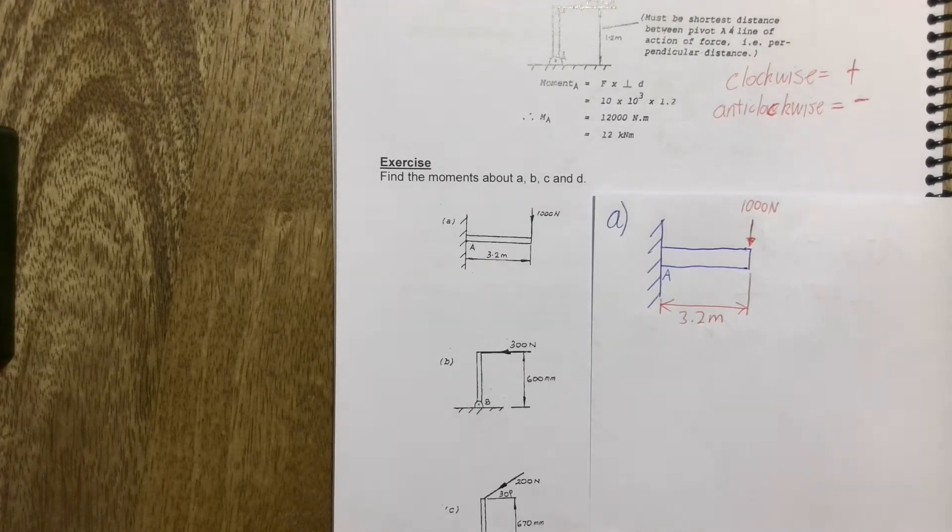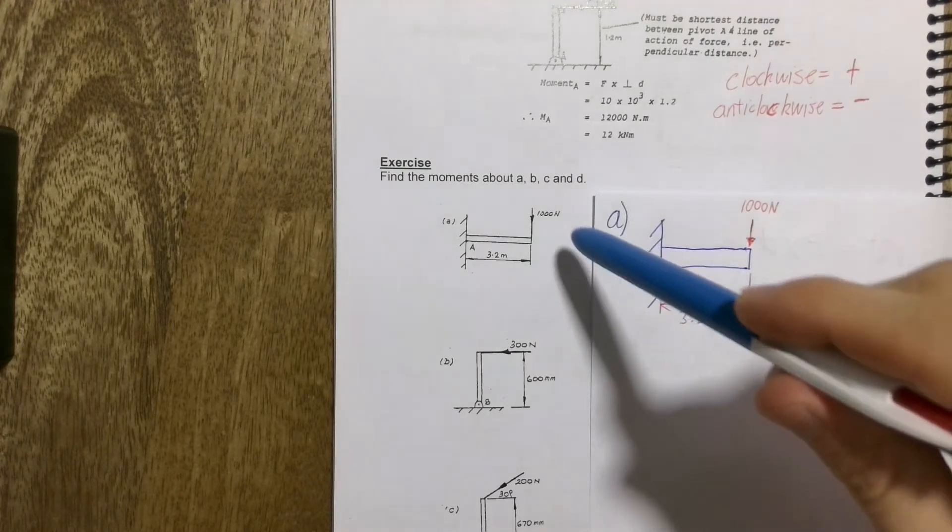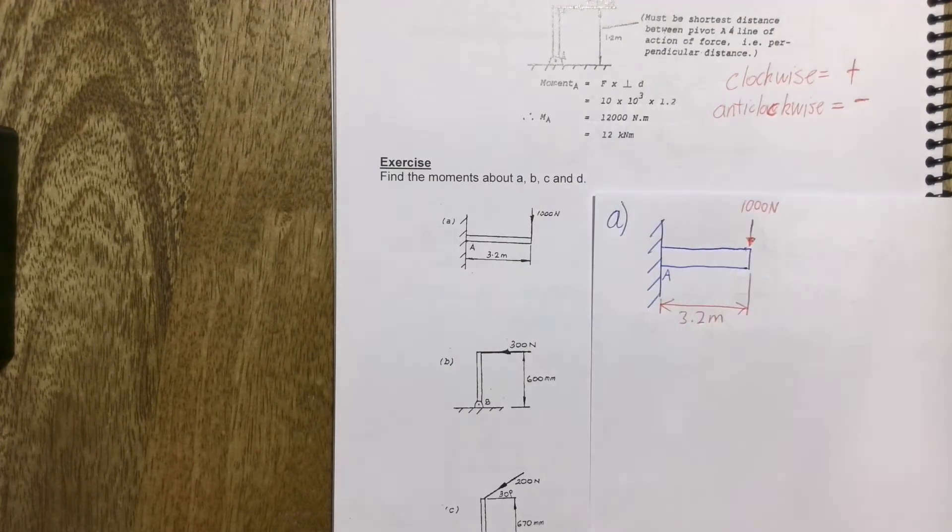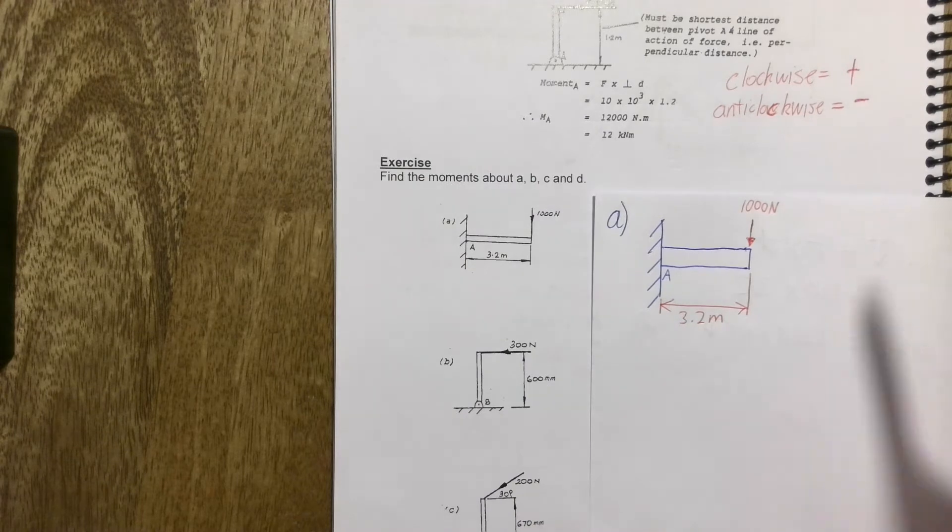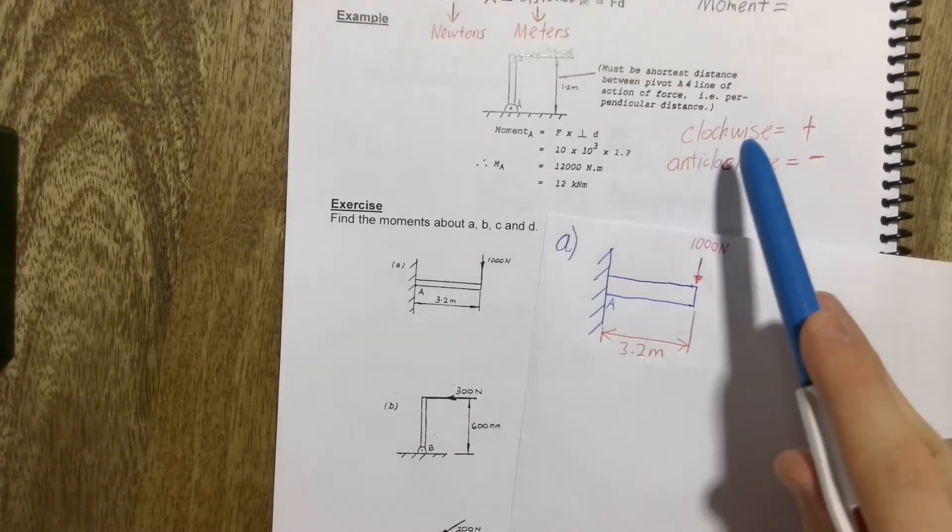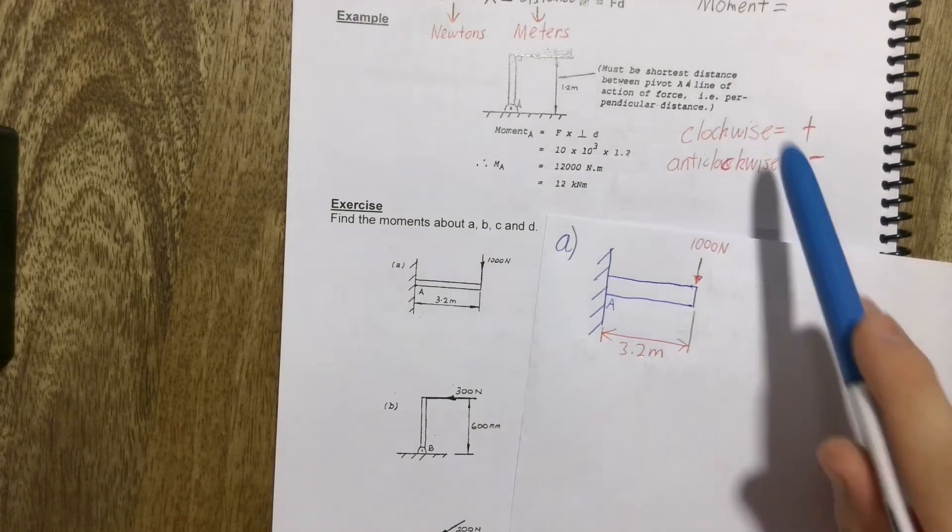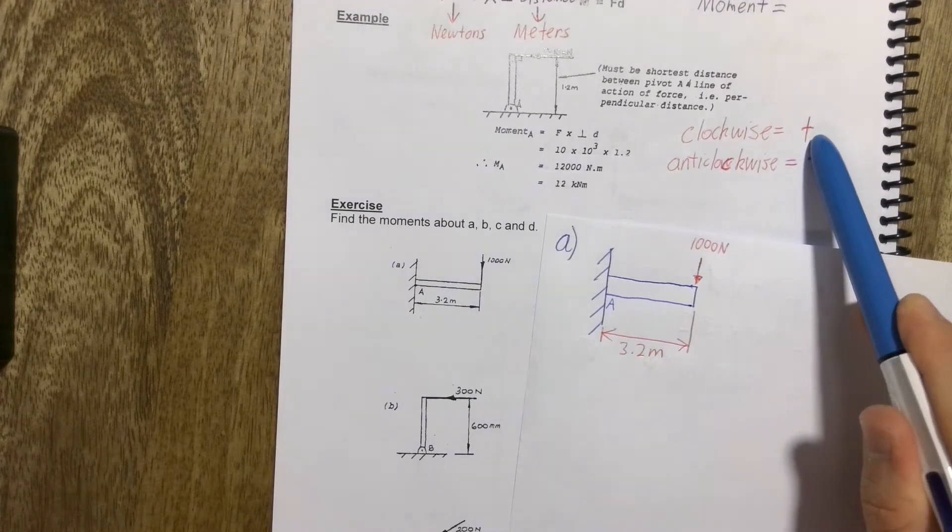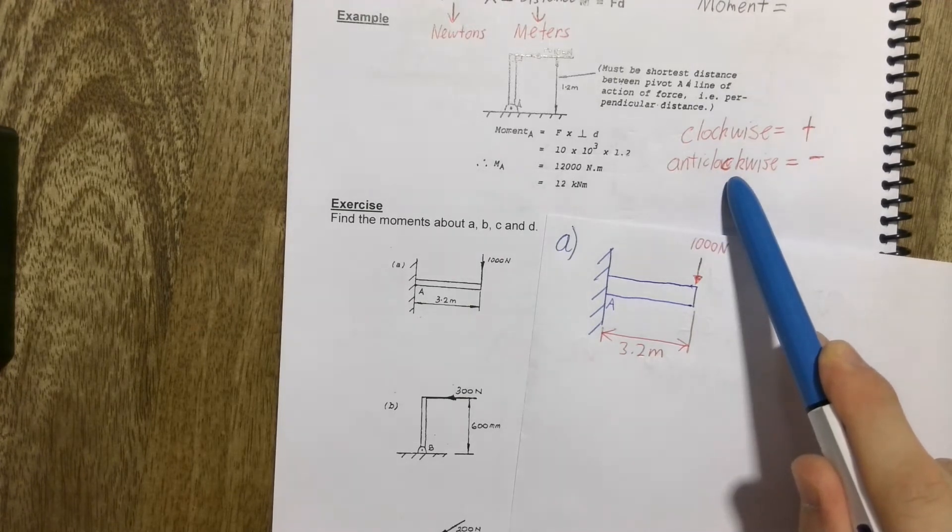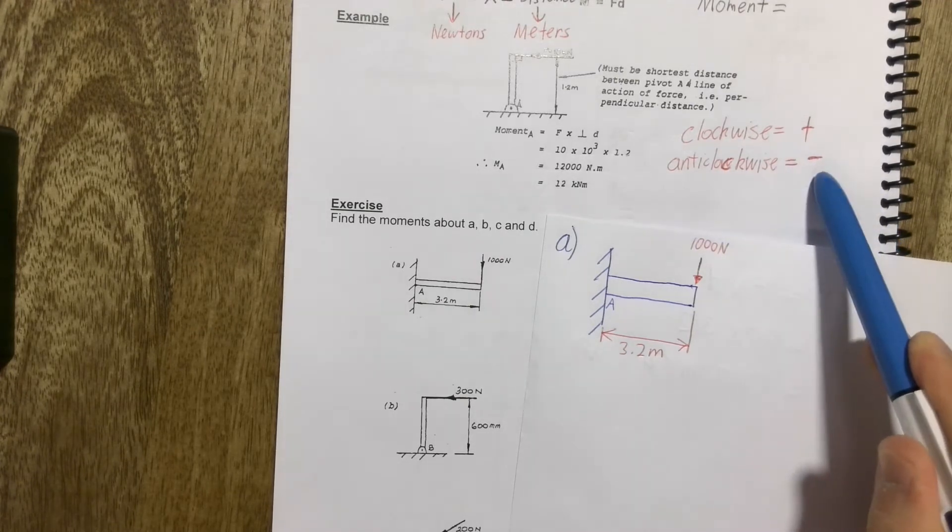Now with moments, we're looking at a turning motion. So a turning motion could either be clockwise or anticlockwise. There are two motions that we're focusing on. A clockwise motion, so something that is pushing in a clockwise motion, will give us a positive. Something that is pushing in an anticlockwise motion will give us a negative, a negative figure.